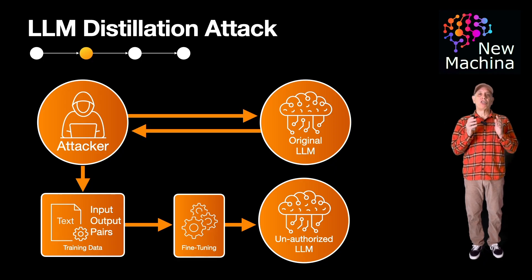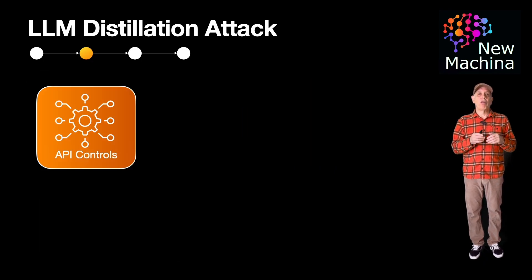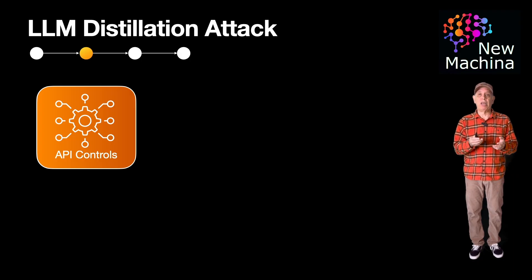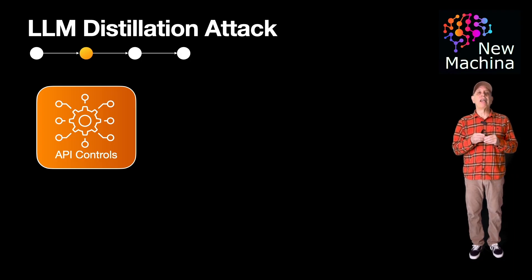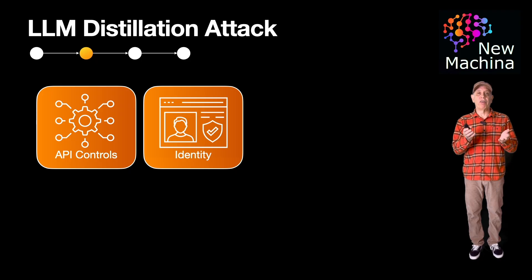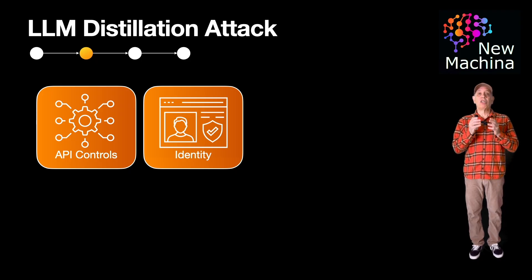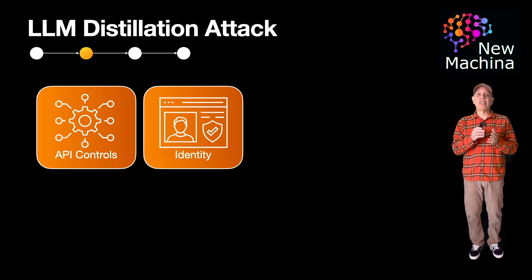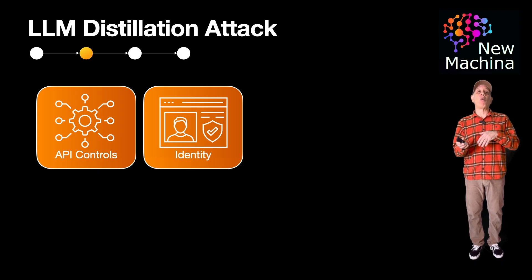Some ways of slowing attackers down include API controls such as rate limiting, quota tiers, and pricing. The second area is identity and verification — this involves linking accounts to real-world entities so that mass extraction with throwaway accounts is more difficult.